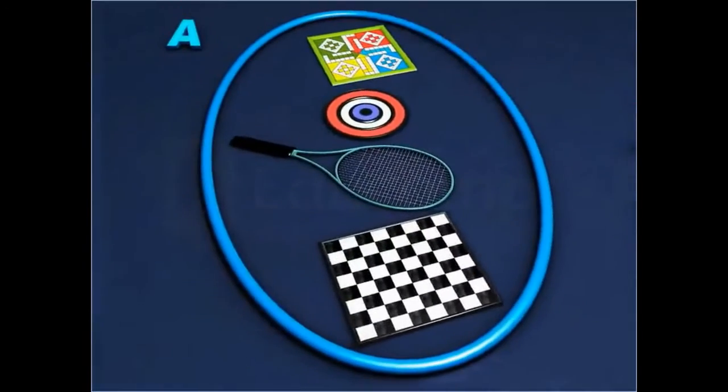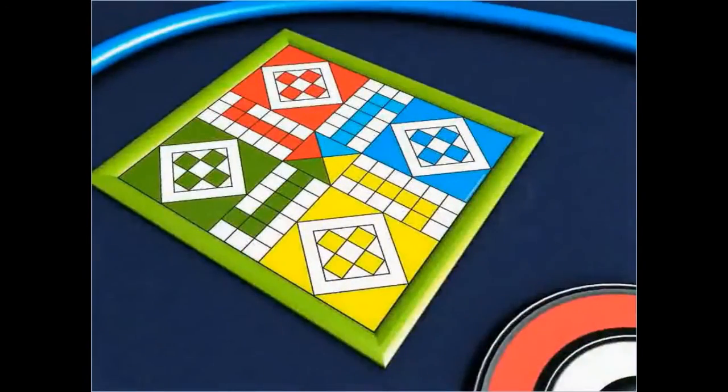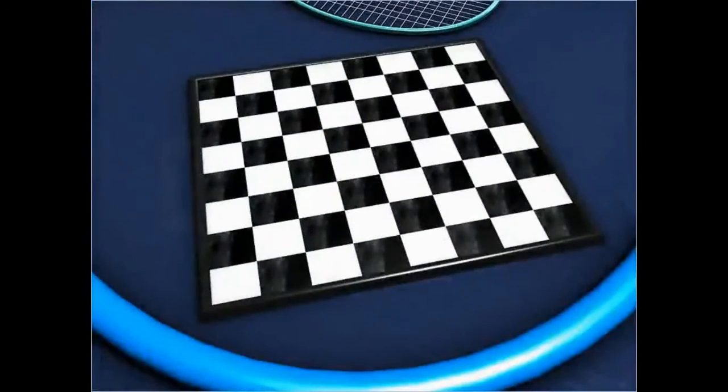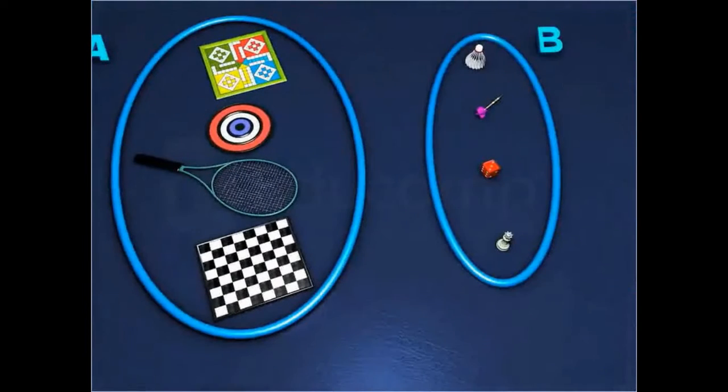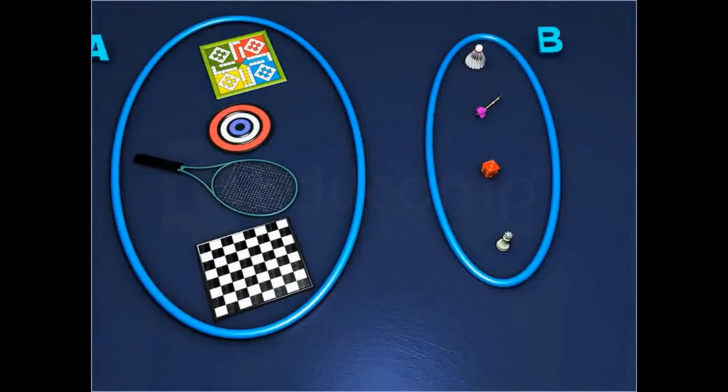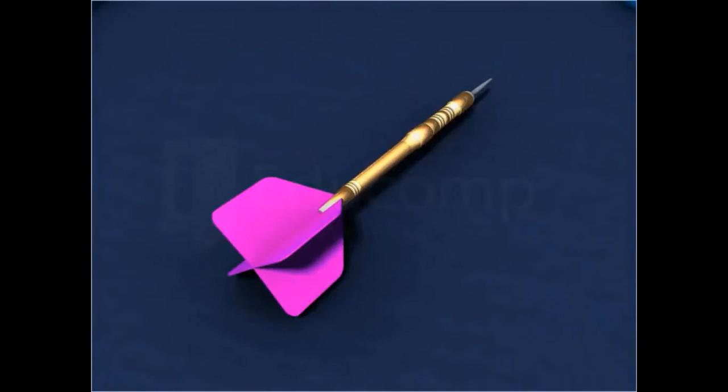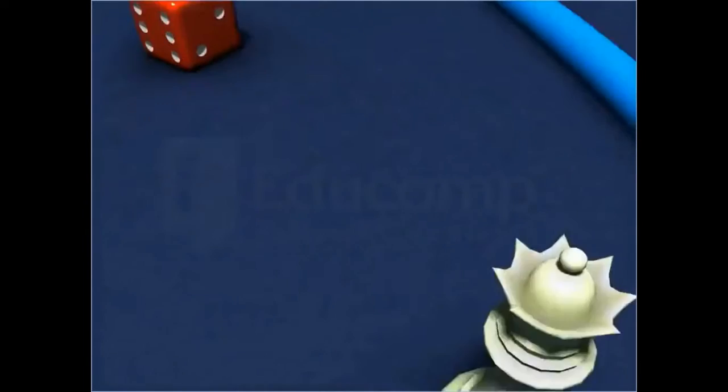Consider set A consisting of a ludo board, dart board, badminton racket and a chess board. Now consider another set B consisting of a shuttlecock, dart arrow, dice and pawn.